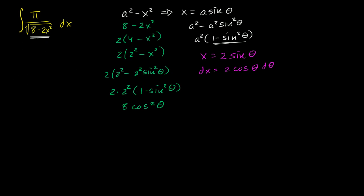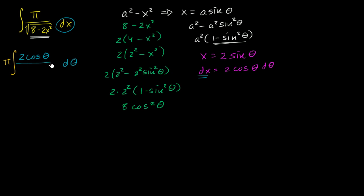So let's rewrite this integral. I'll take the π outside of the integration. We have π times dx, and dx is 2 cosine theta dθ. So we get 2 cosine theta dθ in the numerator, and in the denominator we get the square root of 8 cosine squared theta. The square root of 8 is 2 square roots of 2, and the square root of cosine squared theta is cosine theta.